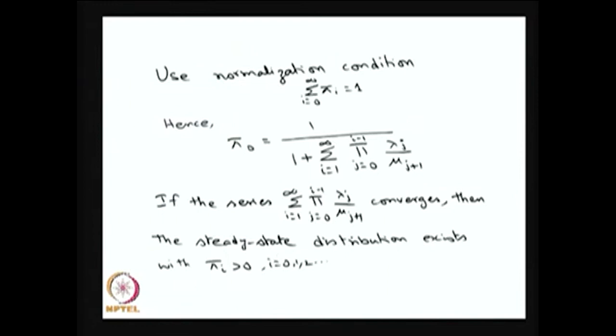If the series diverges — that is, by substituting the values of lambda_i's and mu_i's, if the denominator series diverges — then pi_0 equals 0, and in turn all pi_i's are 0, meaning the steady state distribution does not exist.